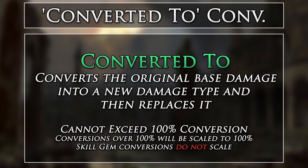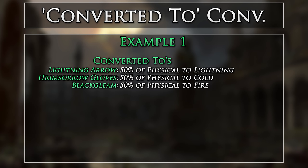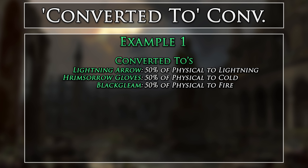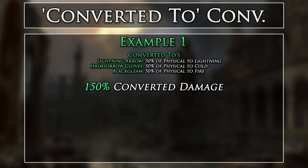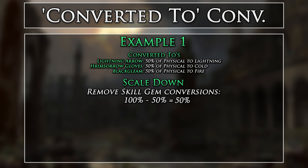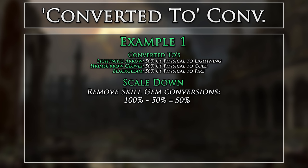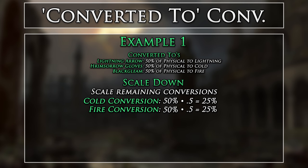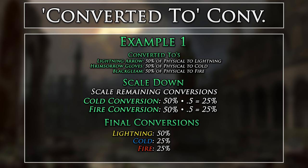Converted To damage cannot exceed 100%. If you have more than 100% conversion, it will scale the conversions to an equal total of 100%. Skill gems that convert damage will take priority in this situation and will remain at their set conversion. Only conversions from the passive tree and gear will be scaled to meet the 100% conversion. For a simple example, say we are using Lightning Arrow which converts 50% of physical to lightning, Hrimsarrow Gloves which converts 50% of physical to cold, and Black Gleam which converts 50% of physical to fire. We have a total of 150% converted damage. The Lightning Arrow skill gem conversion will remain at 50% since it does not scale, meaning that the cold and fire conversions from the gear must be scaled. We must first take away the set skill gem conversions from our total — there is now 50% conversion remaining to be divvied up between cold and fire. Multiplying their conversion value against the percentage of conversion remaining gives us the final conversion numbers: 50% lightning, 25% cold, and 25% fire, with no physical damage, since we have converted all of it to another element.